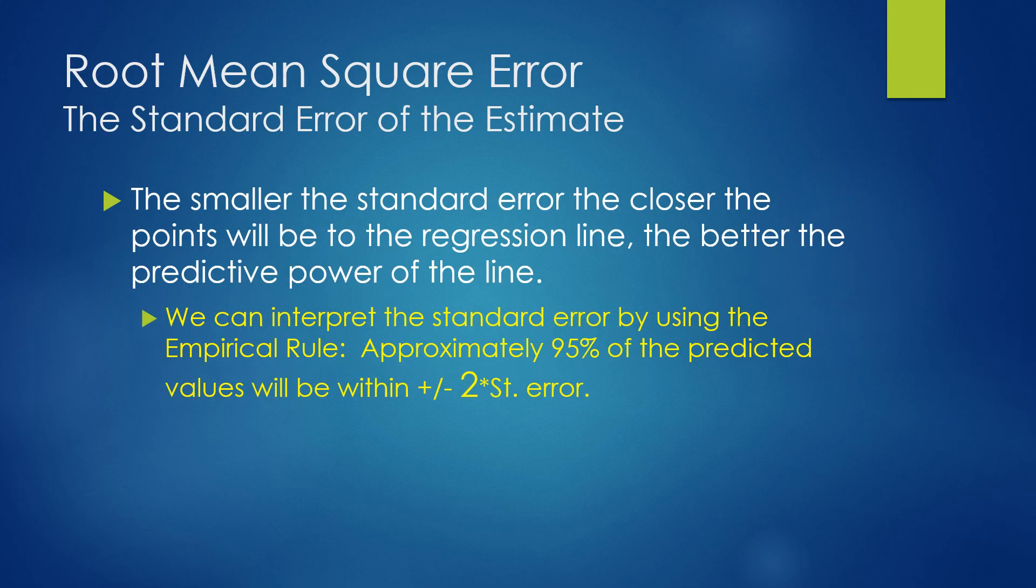We'll also be looking at a value called the root mean square error, sometimes called the standard error of the estimate. The smaller the standard error, the closer the points will be to the regression line, the better the predicted power of that line. We can interpret the standard error by using the empirical rule. We could say approximately 95% of the predicted values will be within plus and minus 2 times the standard error. It just gives us a visual representation of where the data is falling when we use that equation to explain the variable.